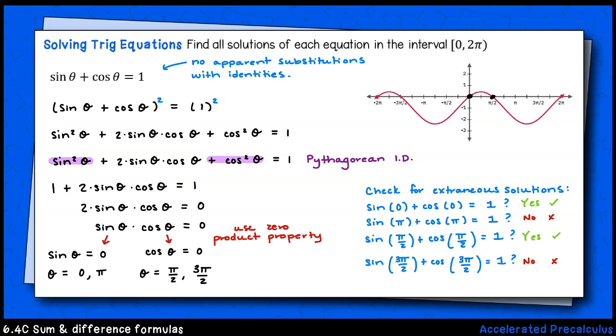We can see from the graph and from the algebraic check that there's only two solutions to this equation, zero and π over two.